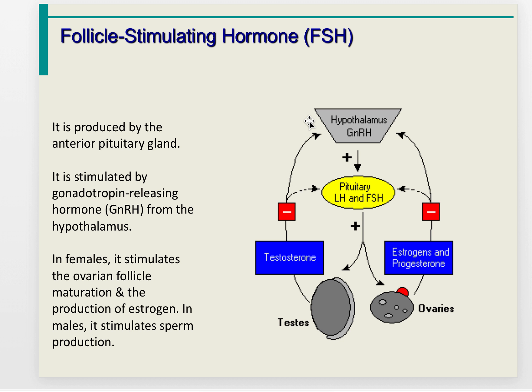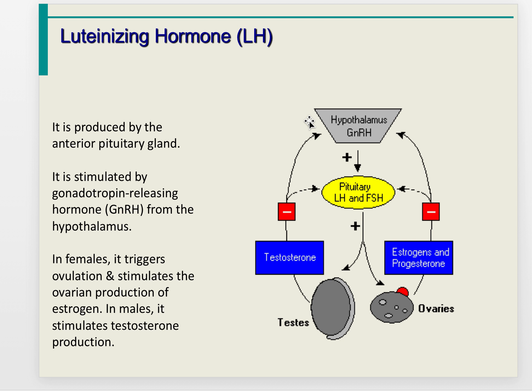Follicle-stimulating hormone is produced by the anterior pituitary and stimulated by gonadotropin-releasing hormone, GnRH, from the hypothalamus. In females, FSH stimulates ovarian follicle maturation and estrogen production; in males, it stimulates sperm production. Luteinizing hormone is also produced by the anterior pituitary, stimulated by GnRH. In females, LH triggers ovulation and stimulates ovarian estrogen production; in males, it stimulates testosterone production.